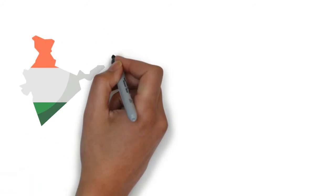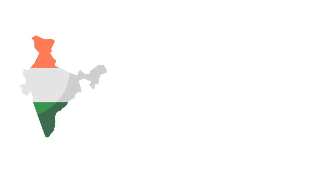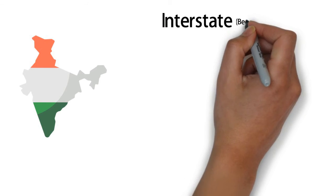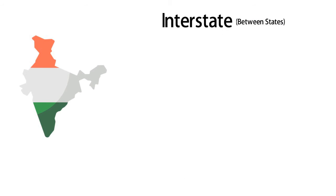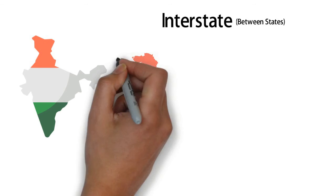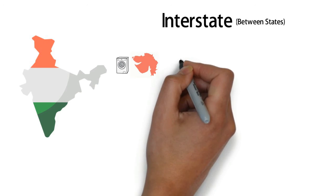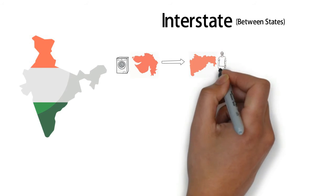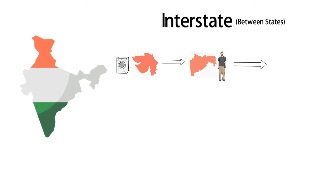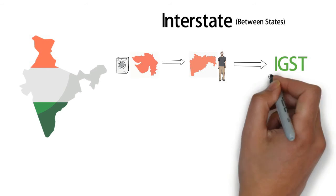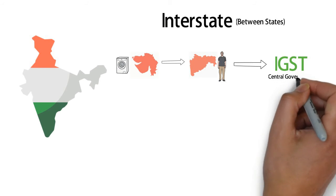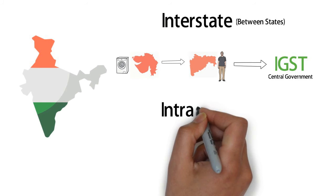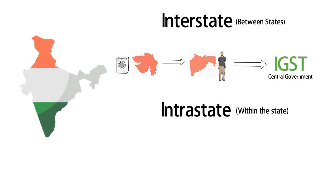GST in India has been classified based on where the product is sold. If the product is sold interstate or between two states, then the GST applied is called IGST. For example, if a dealer in Gujarat sells a washing machine to a person in Maharashtra, the tax collected is called IGST, which goes to the center and is later divided between the states involved and the center.